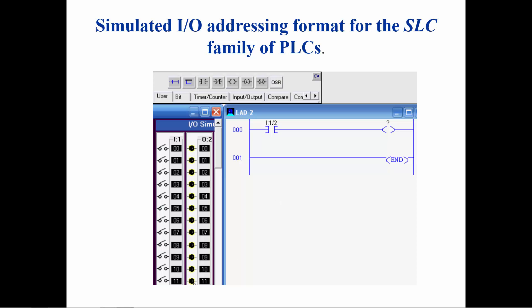Then you would grab the address of an output and drag it to the coil instruction. The address O colon 2 slash 11 refers to the 11th connection on the output module in slot 2.